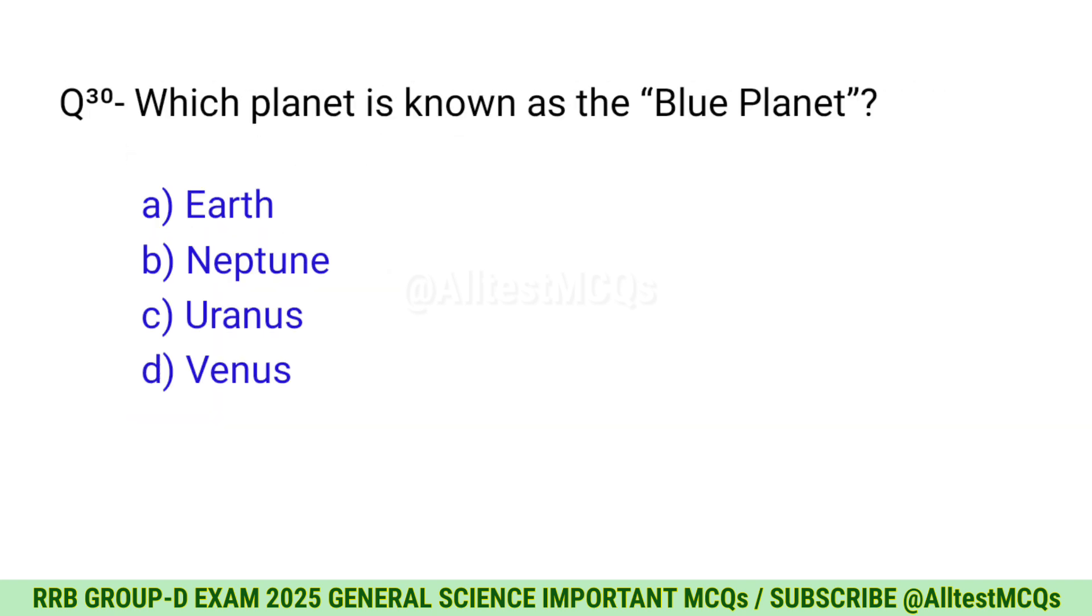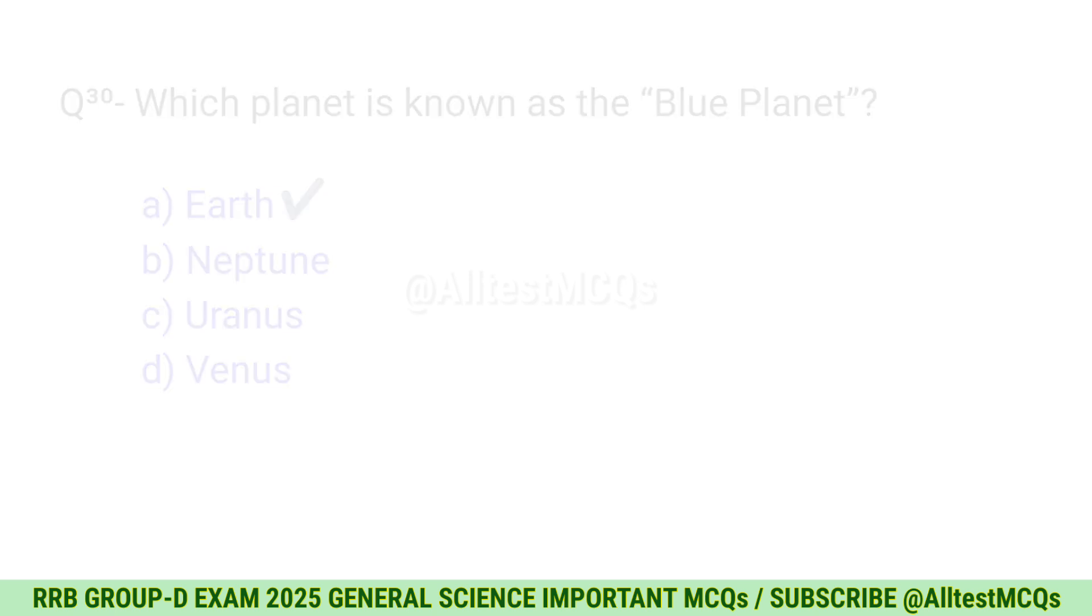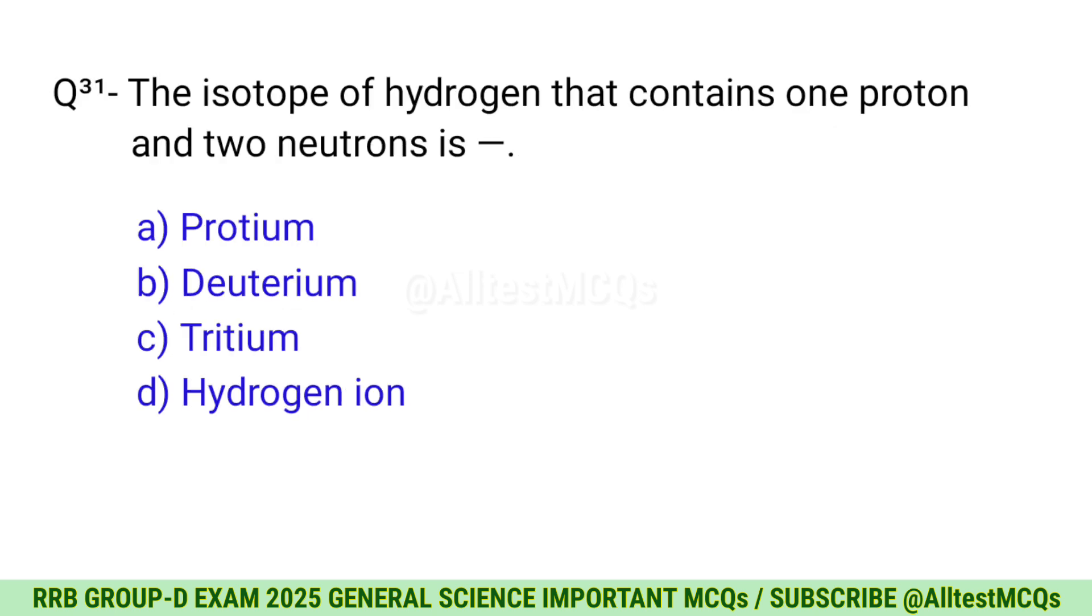Question 30: Which planet is known as the blue planet? The right option is A, Earth. Question 31: The isotope of hydrogen that contains one proton and two neutrons is? Correct option is C, Tritium.